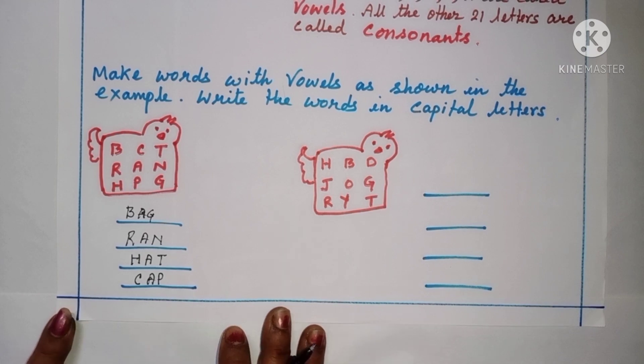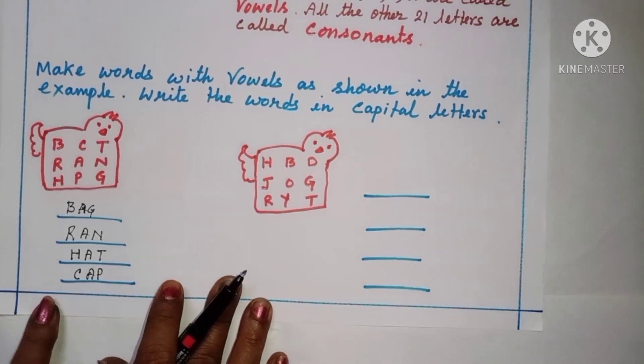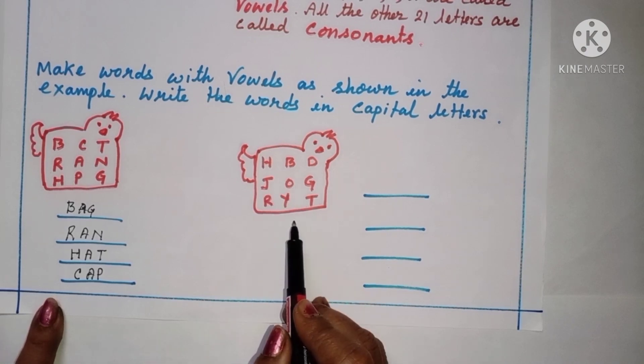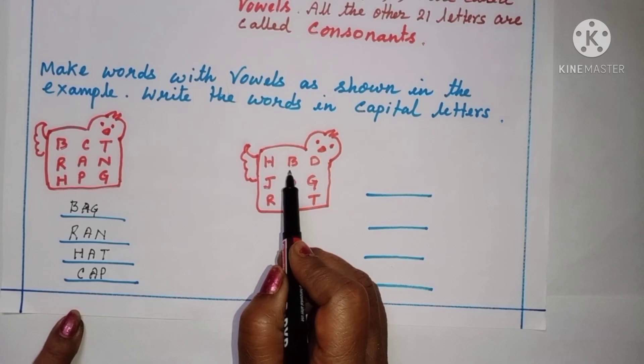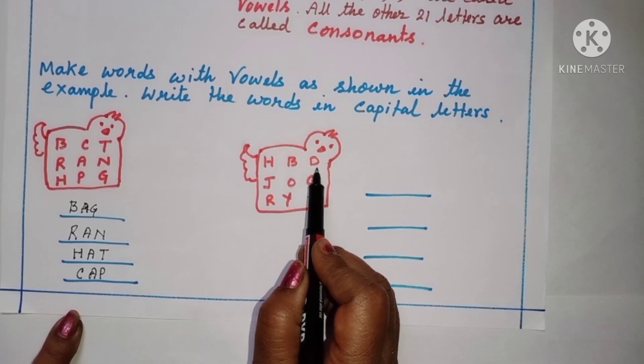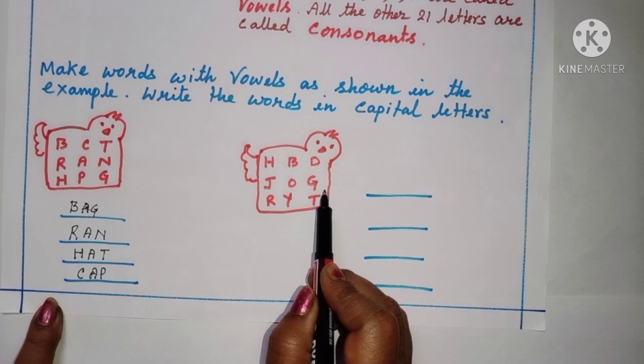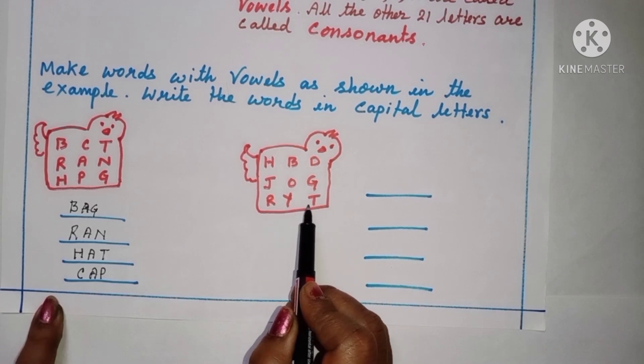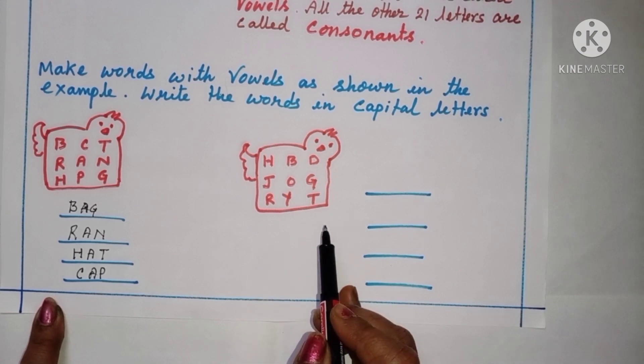Here, again, there is another box and the letters are there. H, B, D, J, O, G, R, Y, T. So again, here we can make small, small word. What are they?